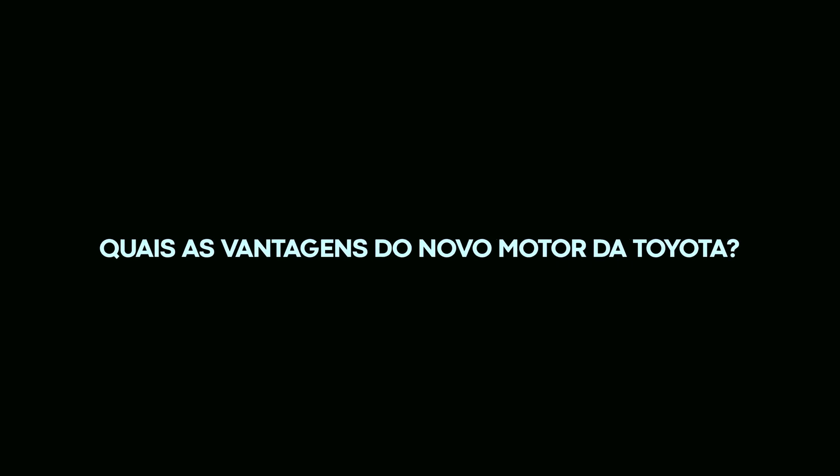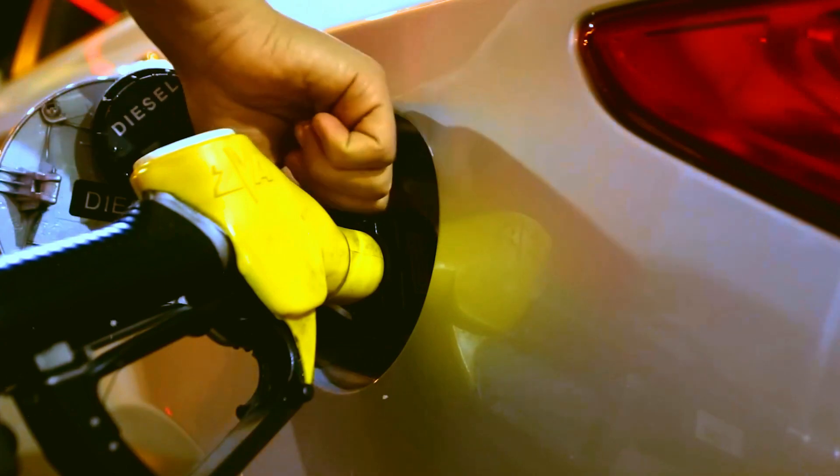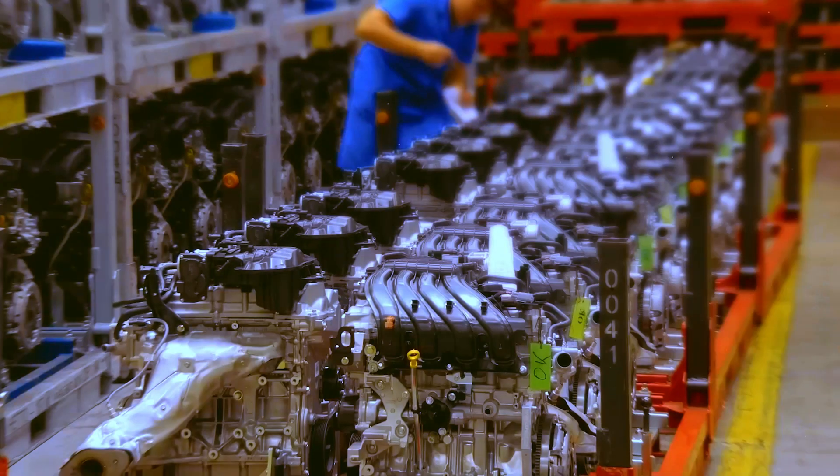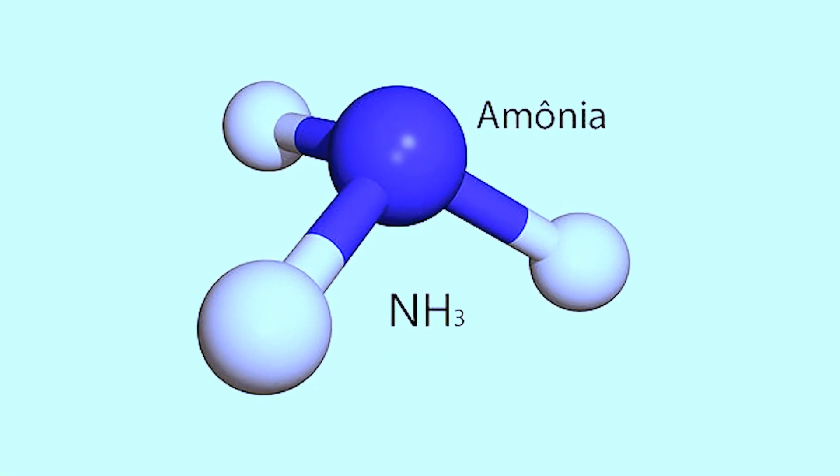Chapter 2: What are the advantages of Toyota's new engine? It is important to understand what an ammonia engine is and why it assumes such significance. An ammonia engine belongs to the category of internal combustion engines that use ammonia as their energy source.